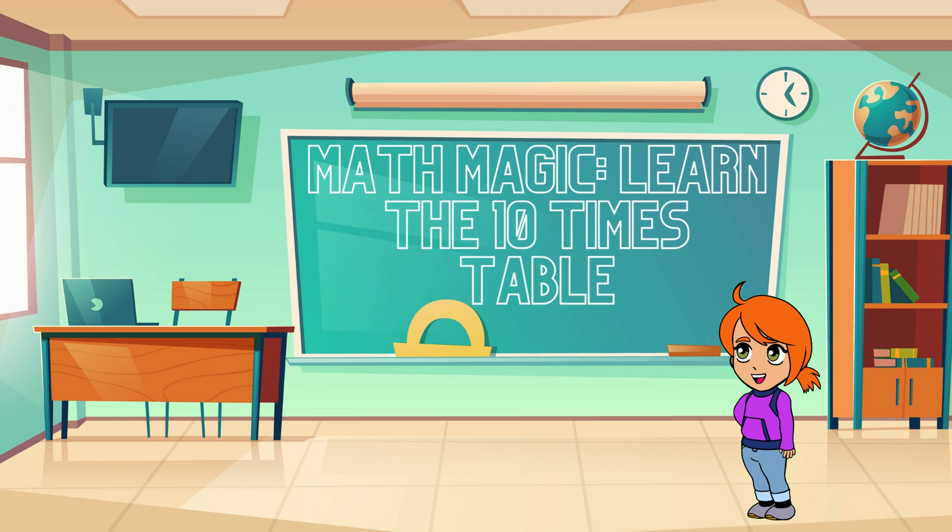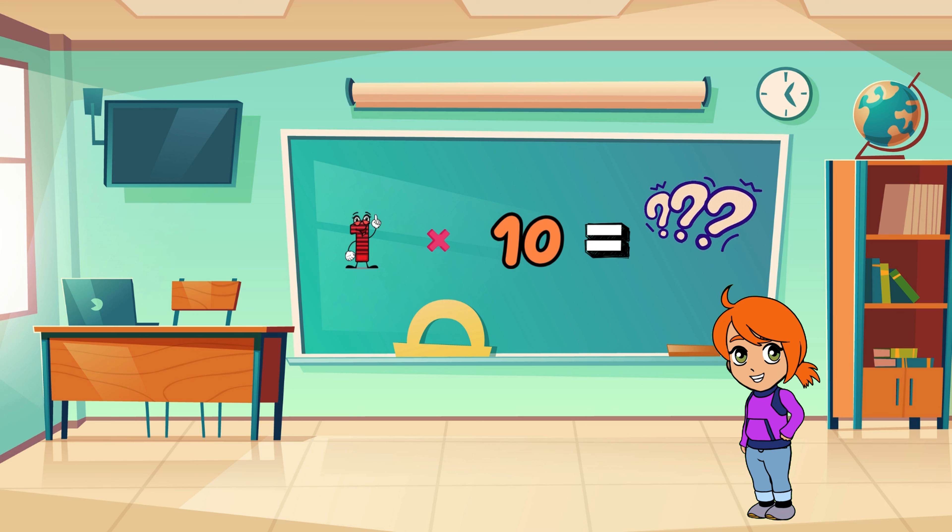Multiplication is just a fancy way of adding the same number over and over. When we multiply by 10, it's like adding 10 a certain number of times. Easy, right? Let's take a look at some examples. We'll start with 1 times 10. What do you think that equals?